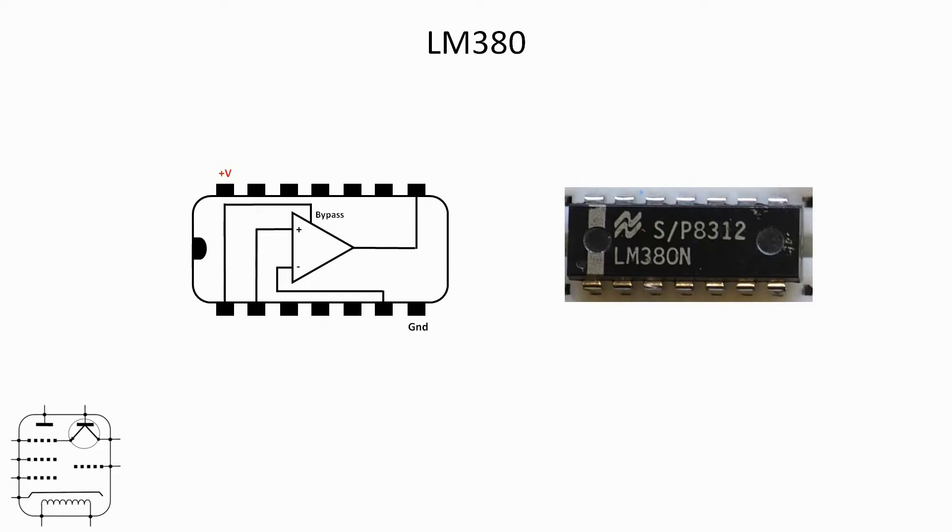Superficially it looks like a normal op-amp with positive and negative inputs. However, it's different because it's also got that input from pin one called bypass. From the datasheet: it's an audio power amplifier with an internally fixed gain of 34 dB and a unique input stage allowing ground-referenced input signals. The output automatically self-centers to one-half of the supply voltage, something we'll make use of later.